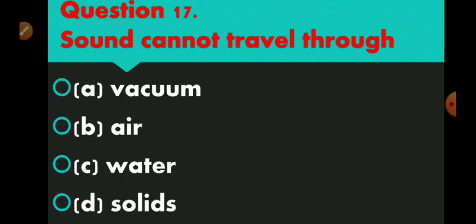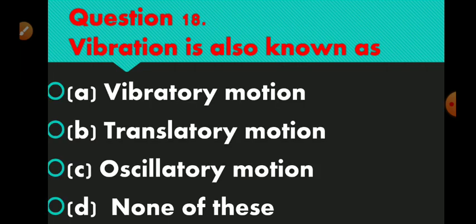Question number 17 is: sound cannot travel through. Option A vacuum, option B air, option C water, option D solids. Right answer is vacuum — option A. Question number 18 is: vibration is also known as. Option A vibratory motion, option B translatory motion, option C oscillatory motion, option D none of these. Right answer is option C — oscillatory motion.